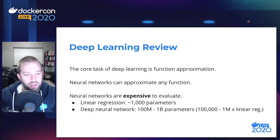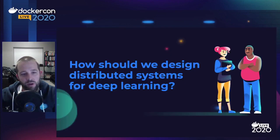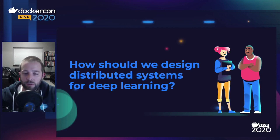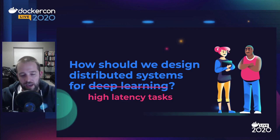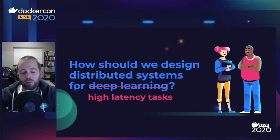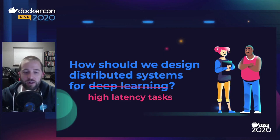The question I want to tackle in this talk is how we should design distributed systems for deep learning. But really, this talk is about high-latency tasks. I'll be focusing on deep learning, but the ideas and designs in this talk are more widely applicable to any task that is very expensive. In this case, that expensive task is evaluating a neural network.